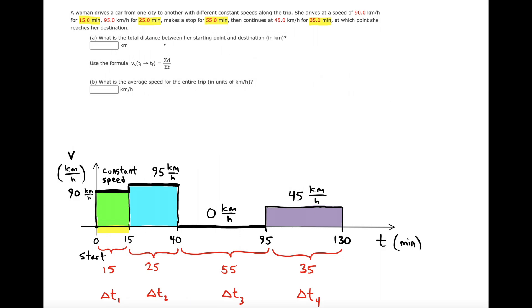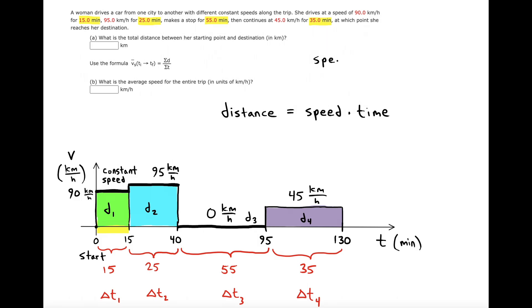Our goal is to find the distances that each of these blocks contributes to her overall trip — we'll call them D1, D2, D3, and D4. To find the distances, we use the motion formula for constant velocity: distance equals speed times time. This is a rearrangement of average speed equals distance over time, and since speed is constant in each interval, this applies directly.